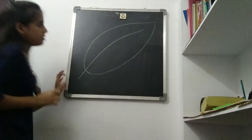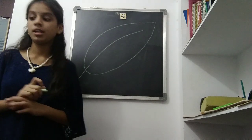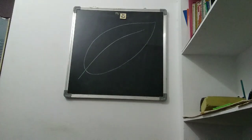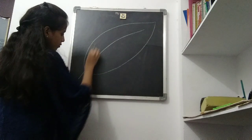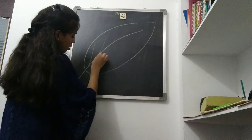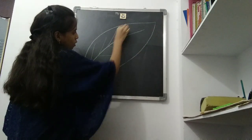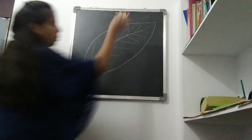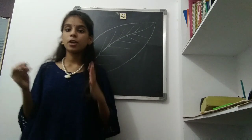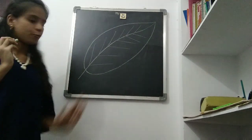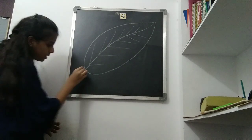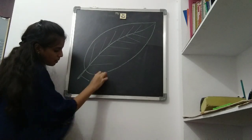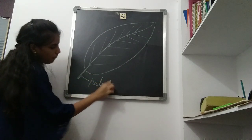This is the leaf. I will say each part. So let us come from the bottom. This part at the bottom is called petiole. This is called petiole.